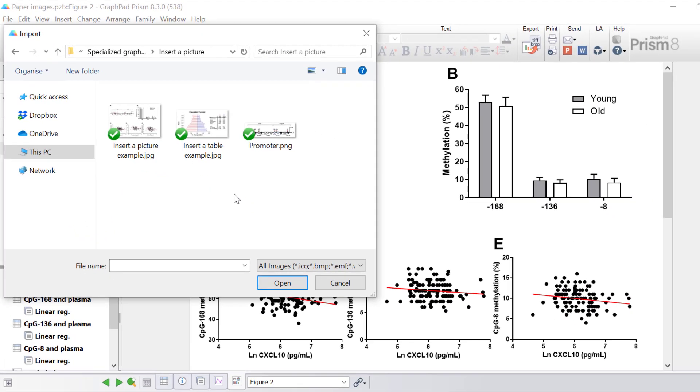You want to find the picture that you want to insert into Prism. Prism in Windows can import a range of image files. Common examples include TIFF, JPEG, PNG, GIF, PSD and PDF files.